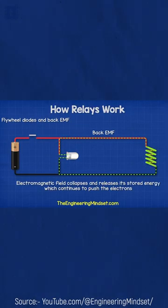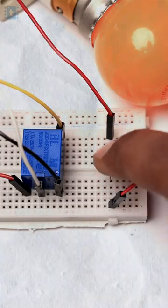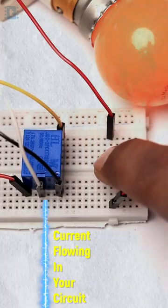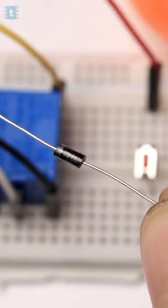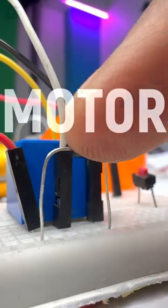Now just imagine if we don't attach a diode. Well, then the reverse current will flow through the controller and it may damage your entire circuit. That's why you should always attach a diode in reverse polarity with inductive loads like motors and relays to protect your circuit, and we call it a flyback diode or a freewheel diode.